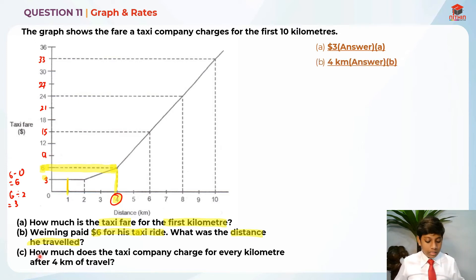Now to solve for part C. How much does the taxi company charge for every kilometer after 4 kilometers of travel? They're basically asking us the charge per kilometer. We don't actually know what the charge is per kilometer.